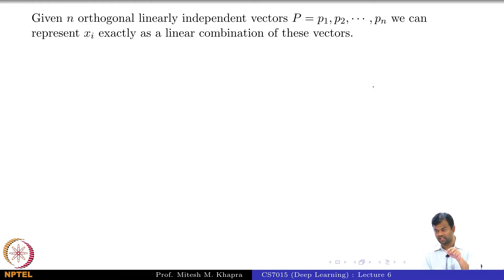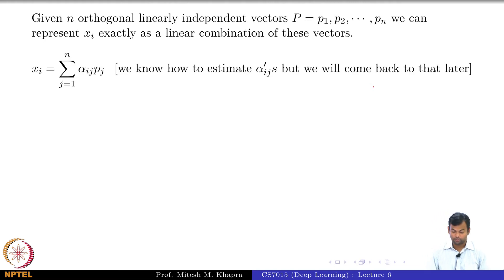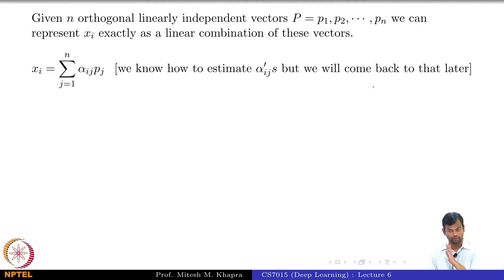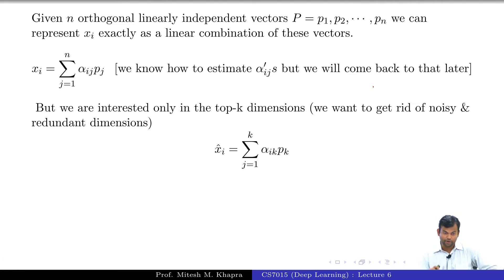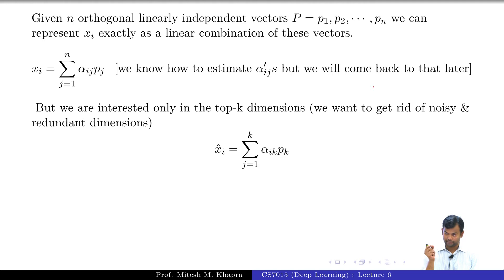Now, if I start chopping off stuff, what will happen? It will just be an approximation. This equation holds and is exact, and we know how to find the alpha_i's because P_j's are conveniently orthonormal. So we know how to find that easily. Now, what if we consider only the top k dimensions? There is going to be some error in the reconstruction. I am not capturing all the information in my original data.